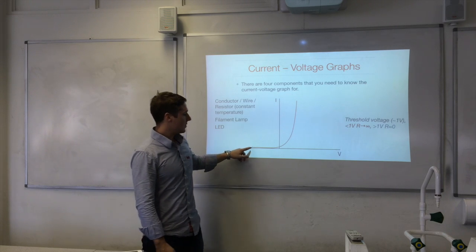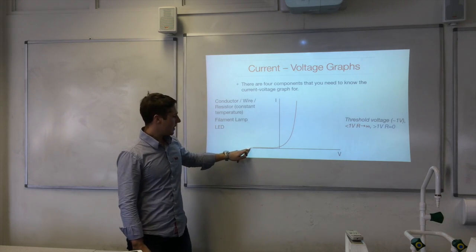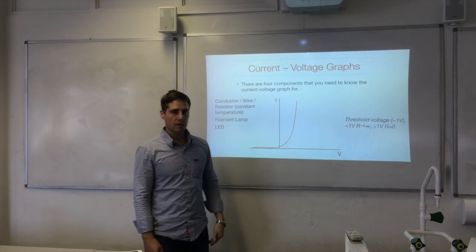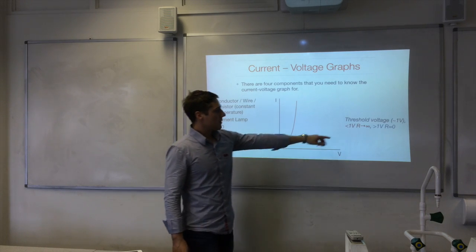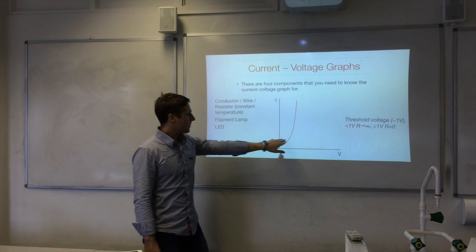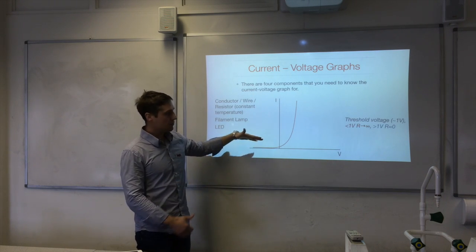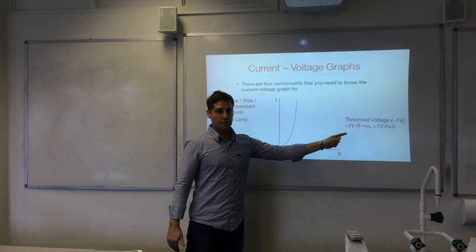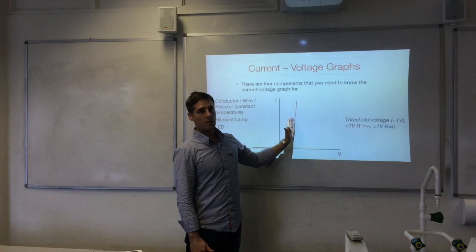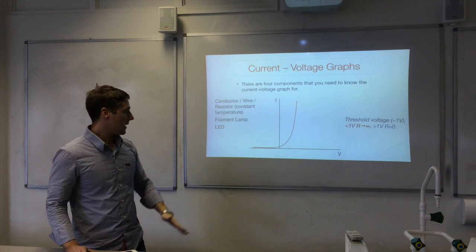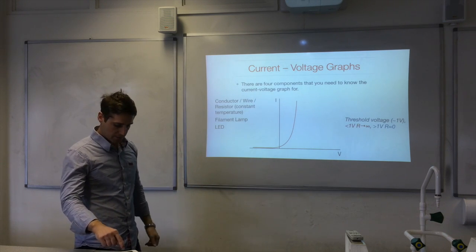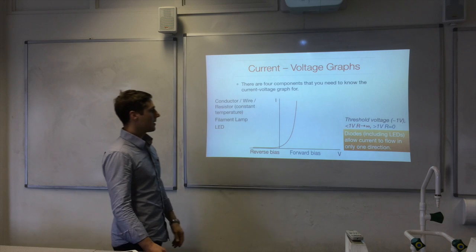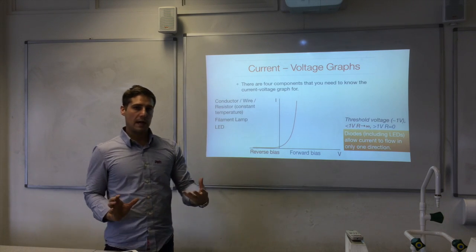Third, an LED (light emitting diode): current is almost zero until it reaches a threshold voltage of about one volt, after which almost all the current flows through. Below the threshold, the resistance tends to infinity. Above it, resistance is approximately zero. This region of negative voltage is called reverse bias, and the positive voltage region is forward bias. The purpose of a diode is to allow current to flow in only one direction.